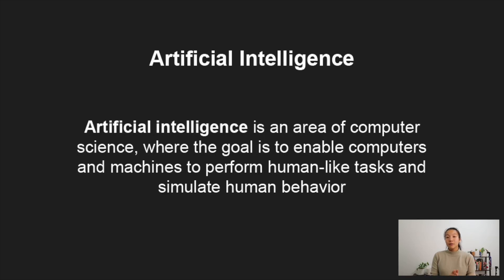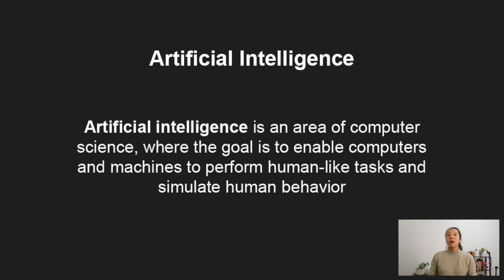How do AI and data science compare to machine learning? Artificial intelligence is also an area of computer science, but here the goal is to enable computers and machines to perform human-like tasks and simulate human behavior. Artificial intelligence is very much emphasized on human replication — if we think of tools like ChatGPT and AI essay writers, what we're trying to do is replicate what a human would be able to do. So it's artificial human intelligence.